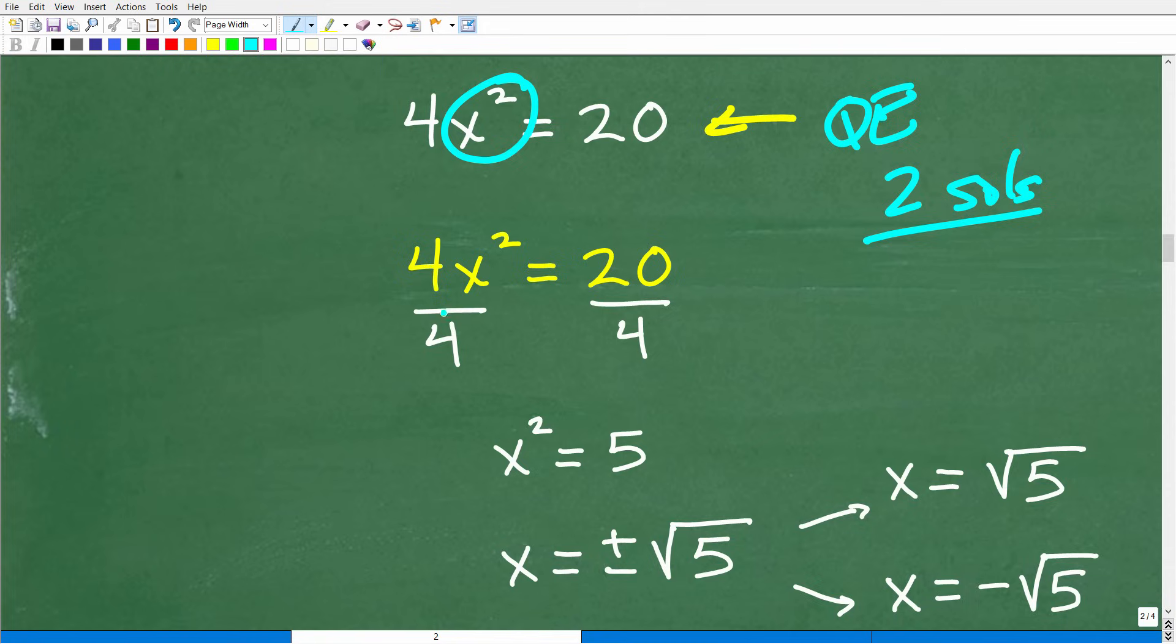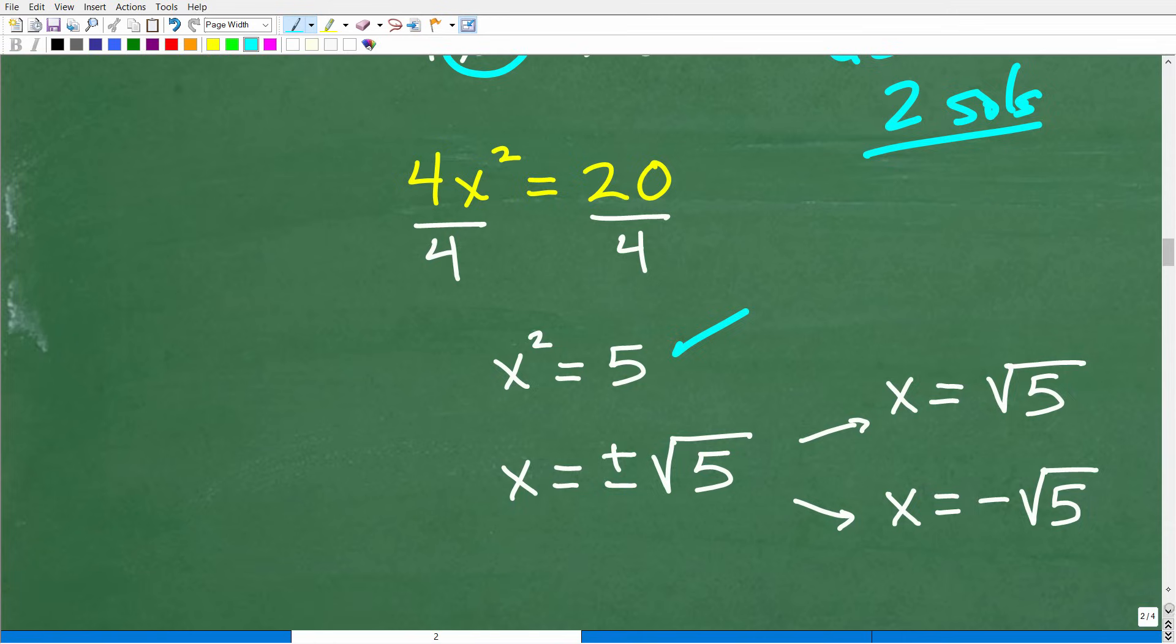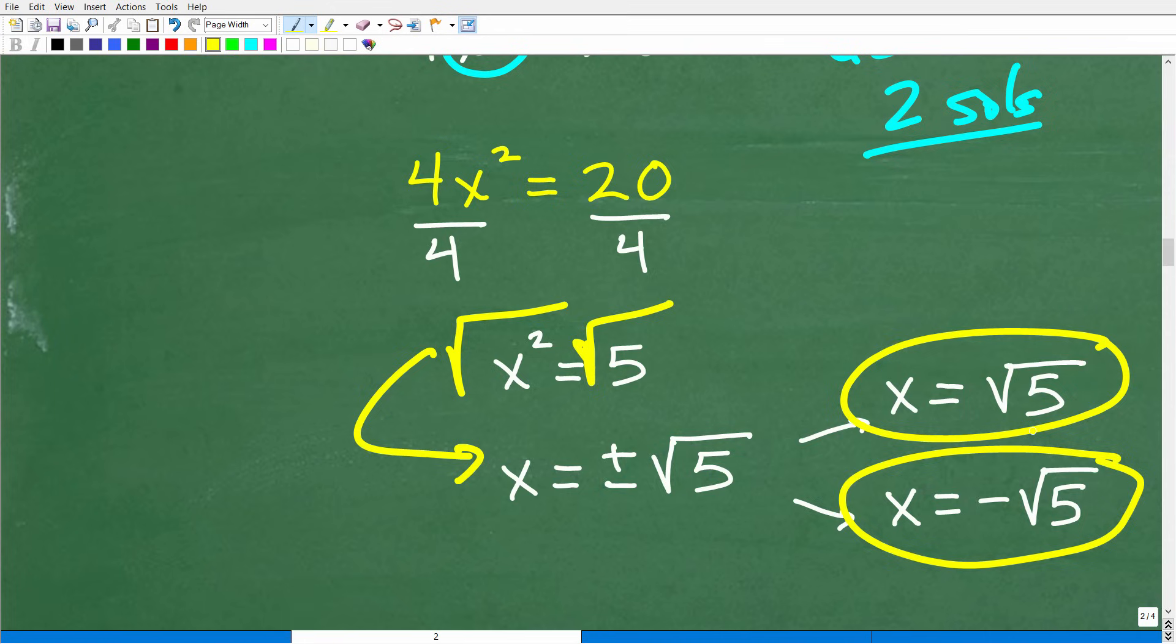Obviously, this particular quadratic equation is very easy because we don't have an X term. So what we can do here is isolate this X squared by dividing both sides of the equation by four. Okay, so when we do this, we're going to get four divided by four. Of course, it's one X squared or X squared. And 20 divided by four is five. All right. So at this point, we have X squared is equal to five. So to solve this equation right here, all we have to do is take the square root of both sides. So the square root of X squared is X. And the square root of five is both positive and negative square root of five.